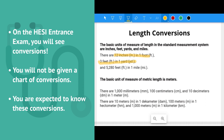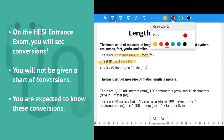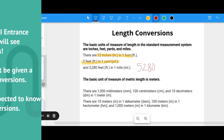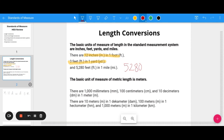To remember that there are 5,280 feet in a mile, I think about five tomatoes — 5, 2, 8, 0, five tomato. When we talk about the metric system, if you can remember how many millimeters, centimeters, and decimeters are in a meter, and how many meters are in each of the other units, that's great. I'm also going to show you a quick mnemonic to help.